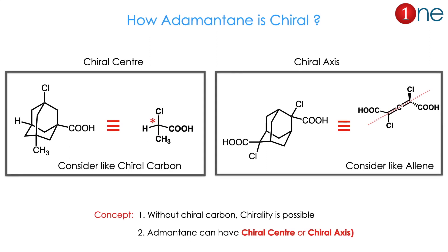Now we will see how adamantane is chiral. If we have four different attachments on a carbon, we may have chirality — point chirality, or a chiral center. For example, one carbon attached with chlorine, then an acid group, then methyl, then hydrogen — if you write it separately, it is a chiral center. The same applies to attachments at terminal positions such as COOH and Cl, which is equivalent to an allene-type system with two perpendicular planes. Allene with four different groups is considered a chiral carbon. The key concept: without a chiral carbon, chirality is still possible here. Adamantane can have a chiral center as well as a chiral axis.